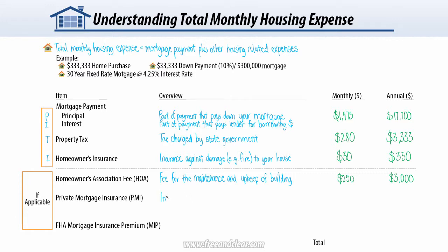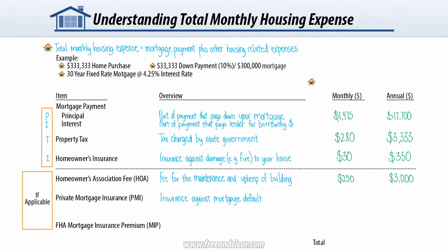Another potential component of monthly housing expense is private mortgage insurance, or PMI. Depending on the amount of your loan relative to the value of your property — known as the loan-to-value ratio — you may be required to pay PMI. PMI is typically required when the loan-to-value ratio exceeds 80%. In this example, our home value is $333,333 and our mortgage is $300,000, so our loan-to-value ratio is 90%. The borrower can stop paying PMI when the loan-to-value ratio falls below 80%, but must request its removal. The ongoing PMI cost in our example is approximately 0.45% of the mortgage amount per year, so $113 per month or $1,350 per year.